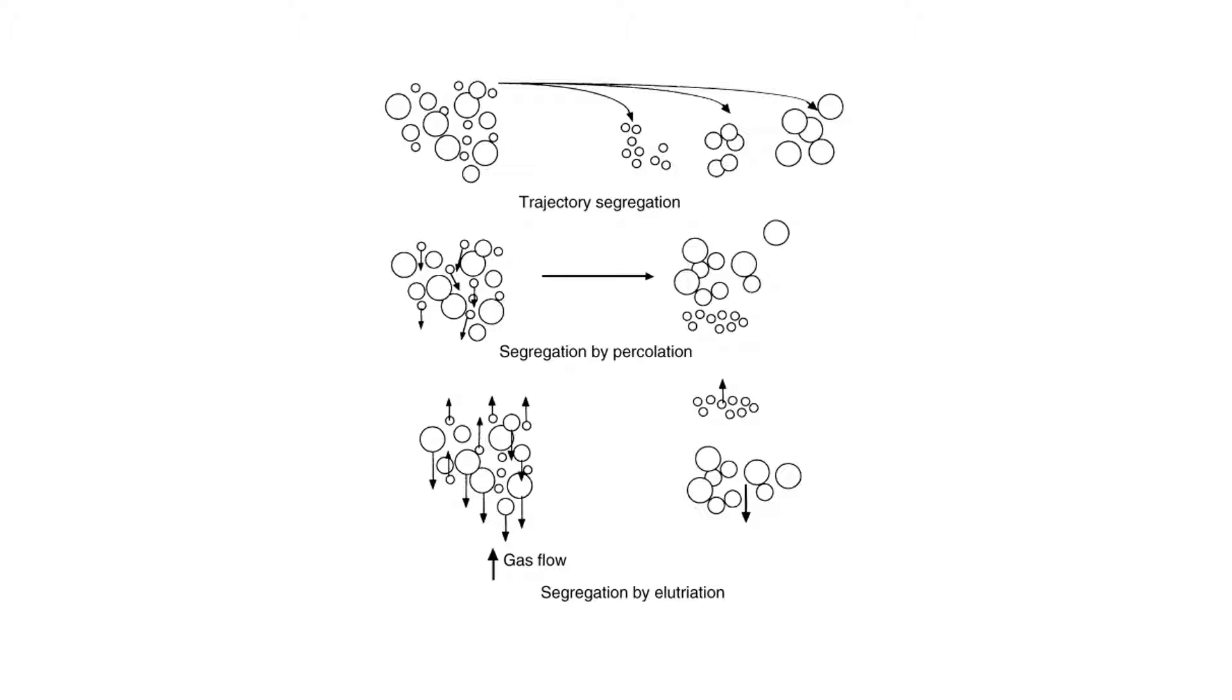Trajectory segregation occurs when particles are caused to move through the air and are projected horizontally. A particle of diameter 2x would therefore travel four times as far before coming to rest. The smaller particles tend to fall shorter and the larger particles, the ones with a larger diameter, tend to move further.